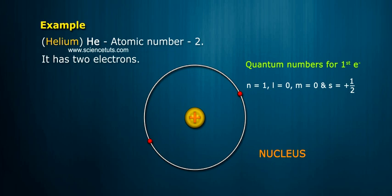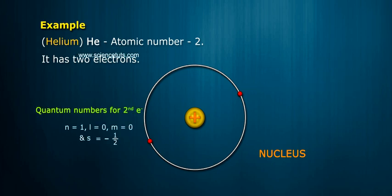Quantum numbers for first electron: n is equal to 1, l is equal to 0, m is equal to 0, and s is equal to plus half. Quantum numbers for second electron: n is equal to 1, l is equal to 0, m is equal to 0, and s is equal to minus half.